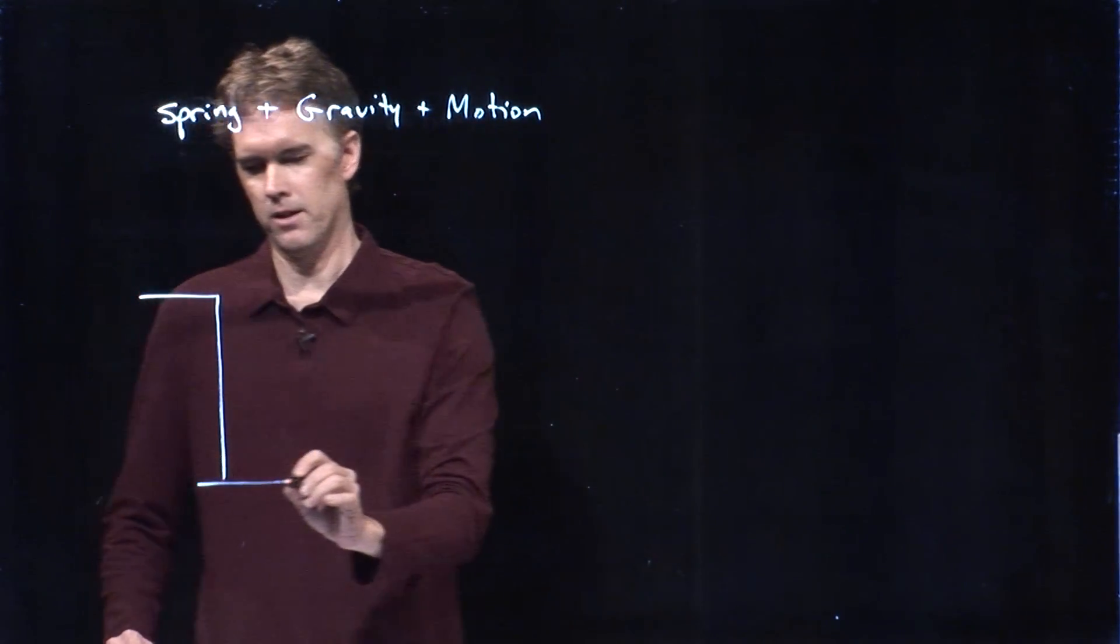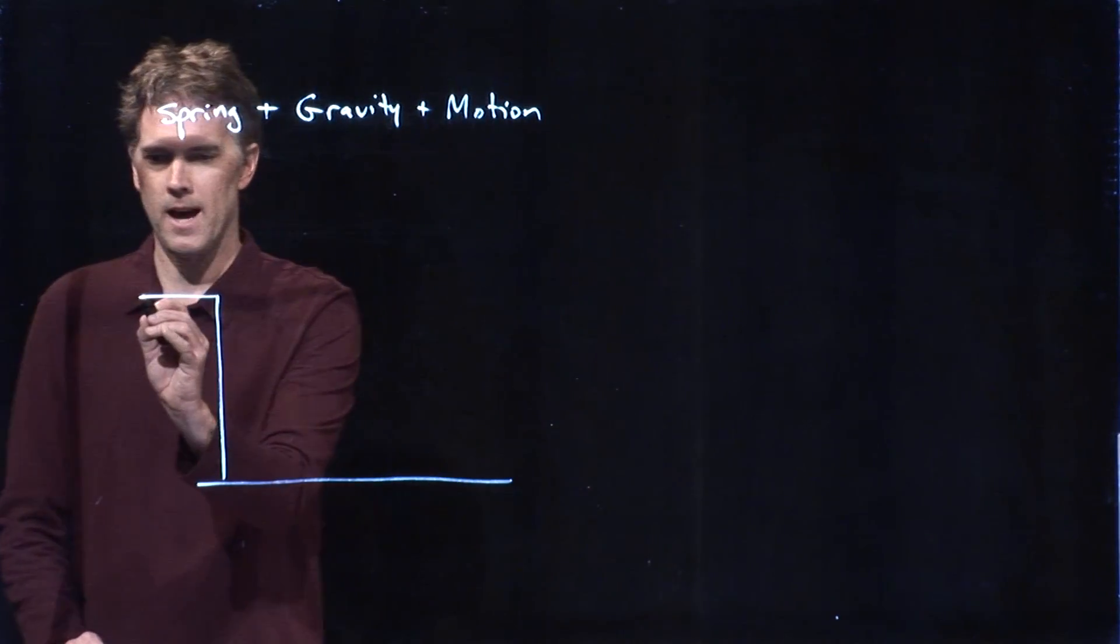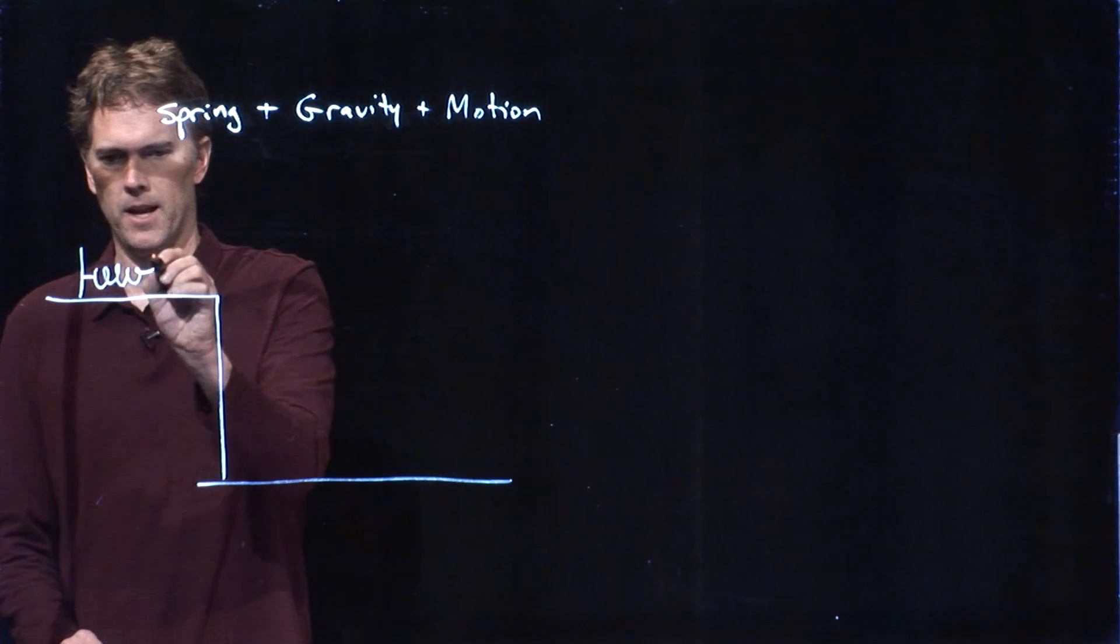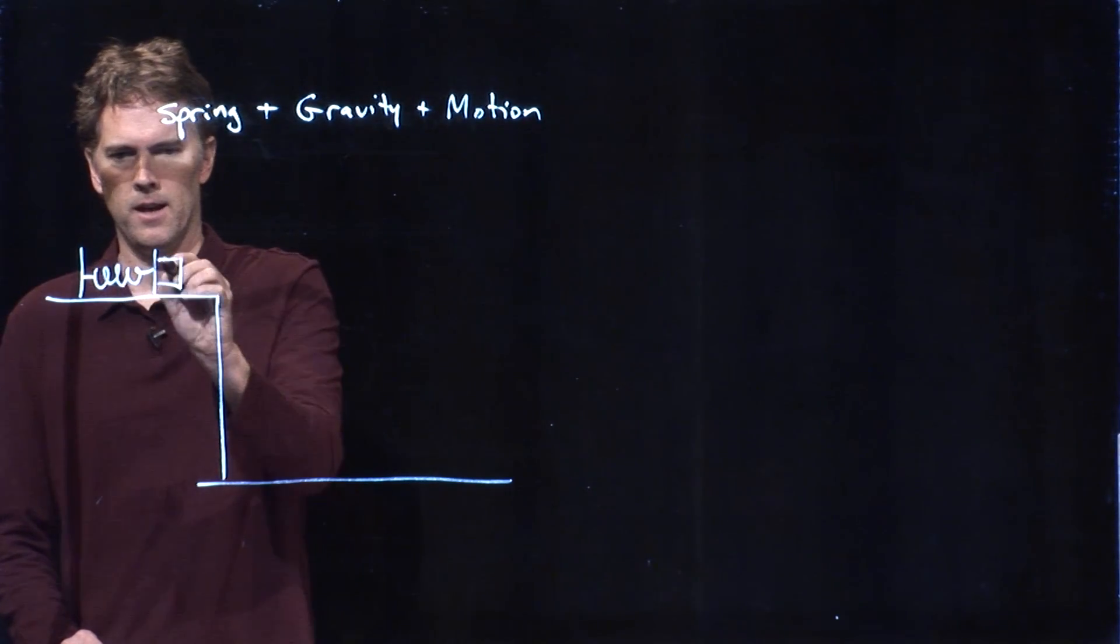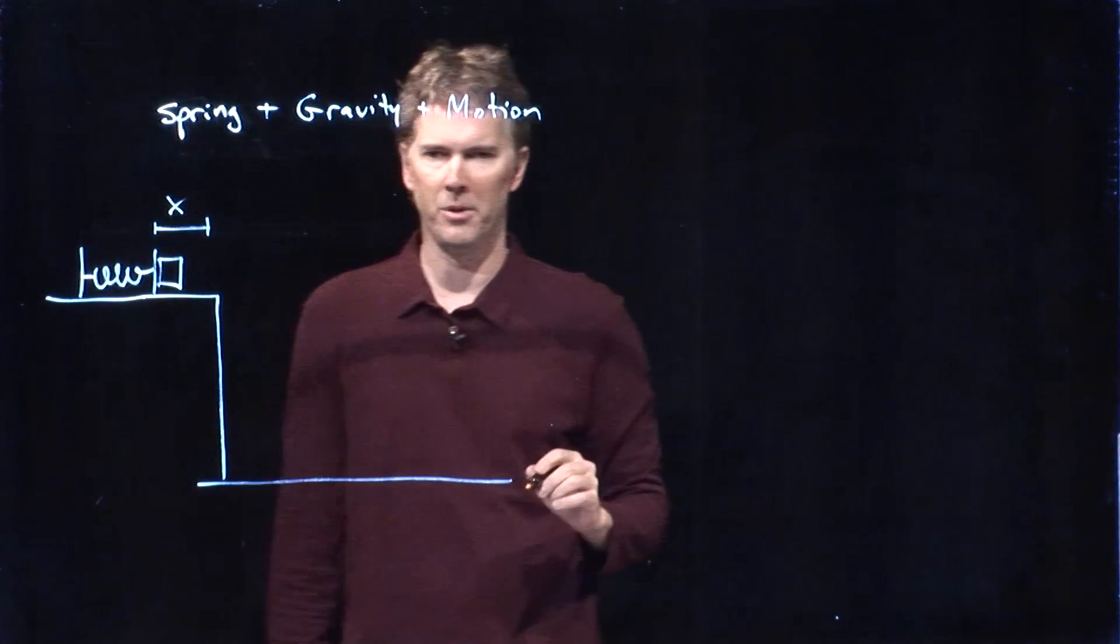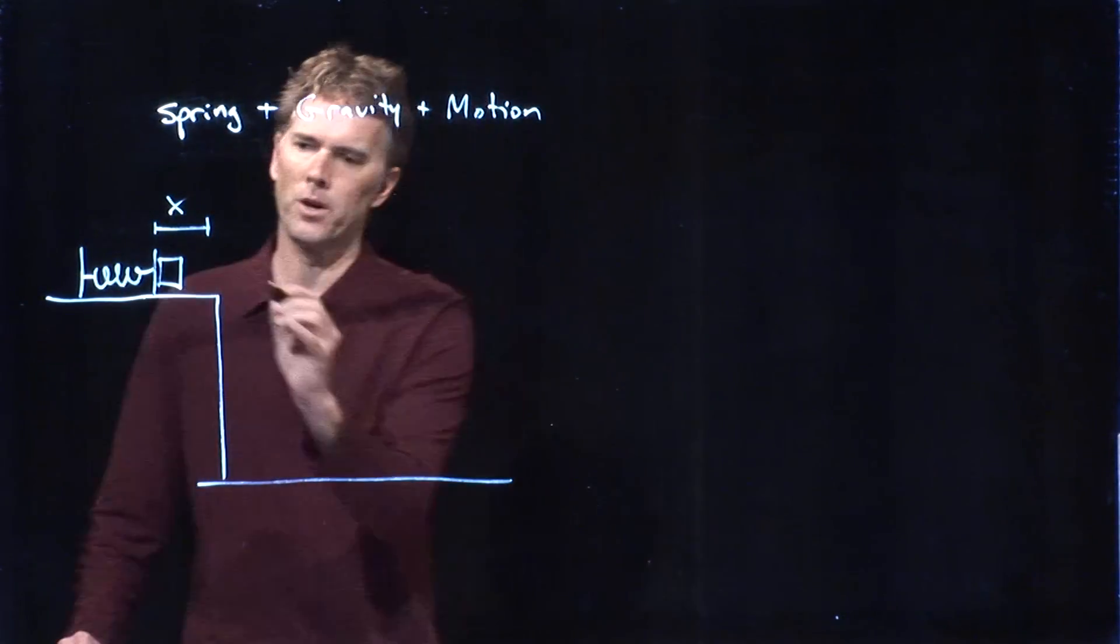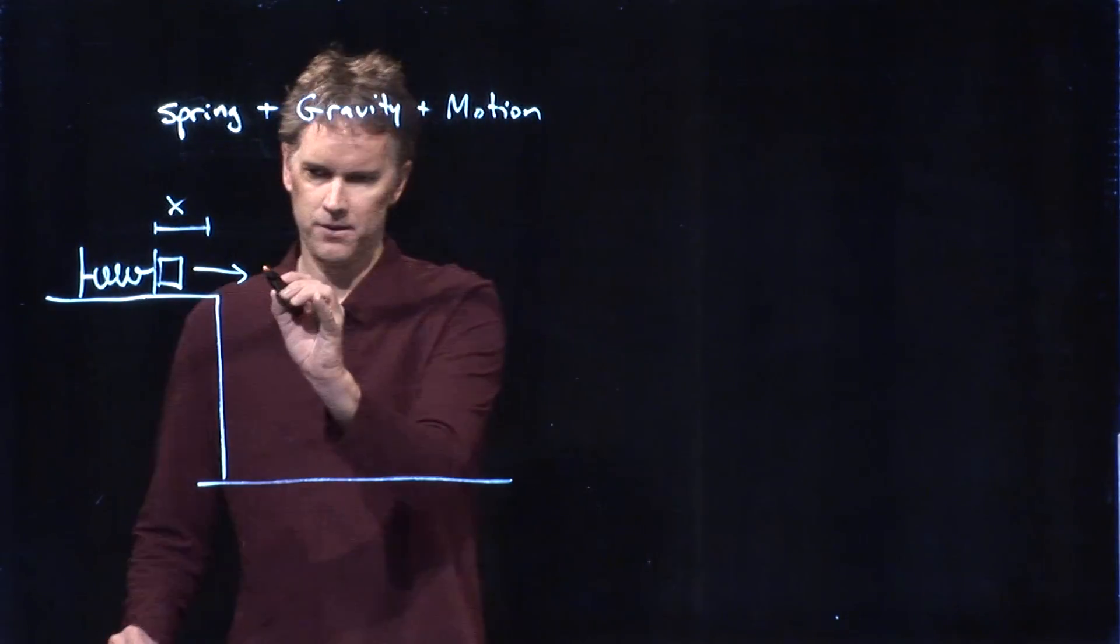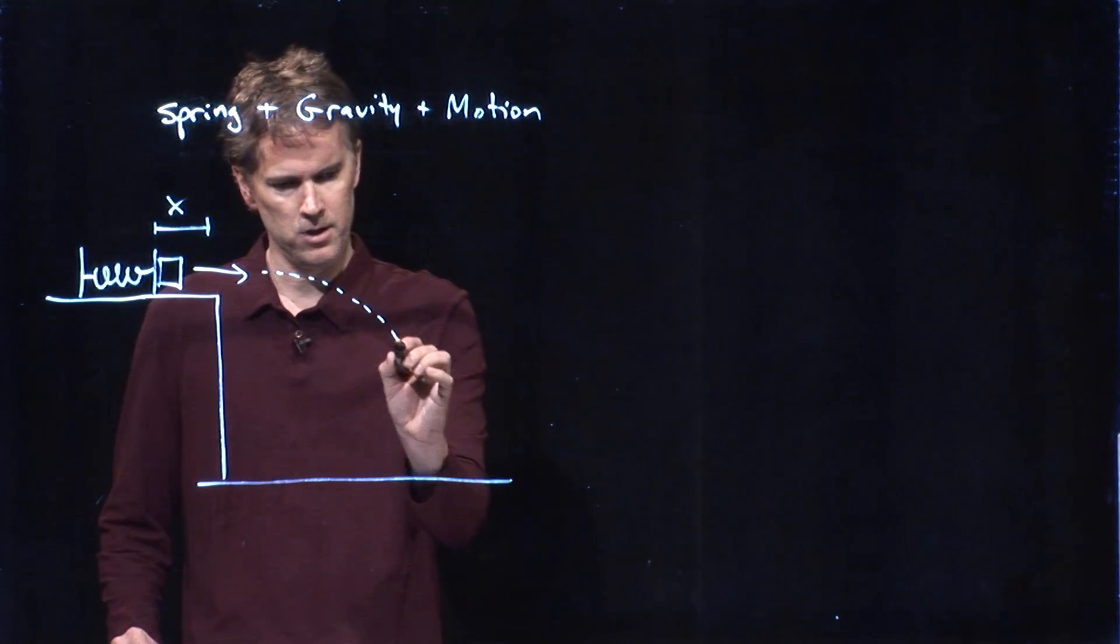Let's say the problem looks like this. We've got a frictionless table that has a spring on it, and that spring is compressed a distance x from its equilibrium, and then we're going to launch this thing off the table, and it's going to go to the ground.